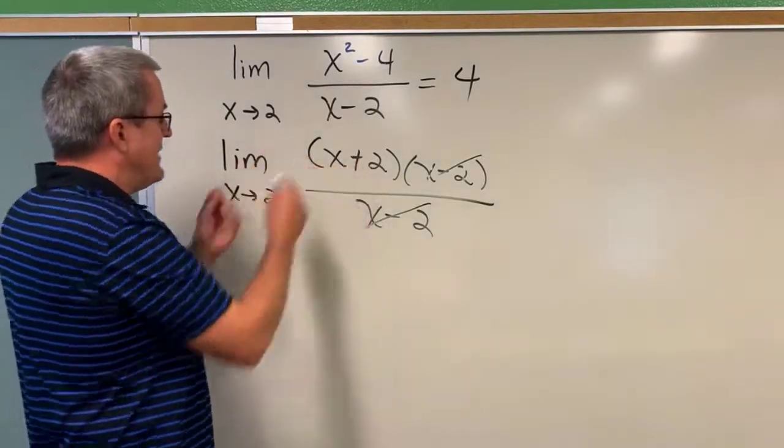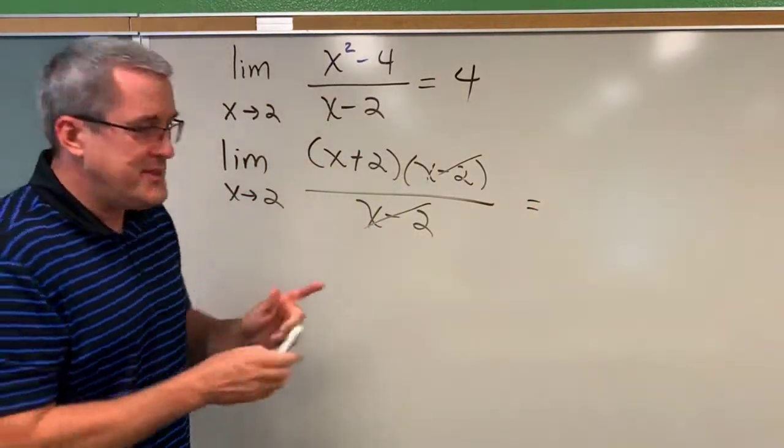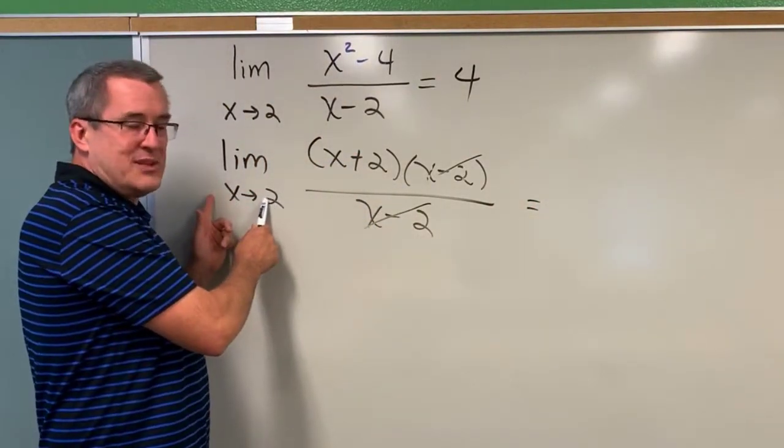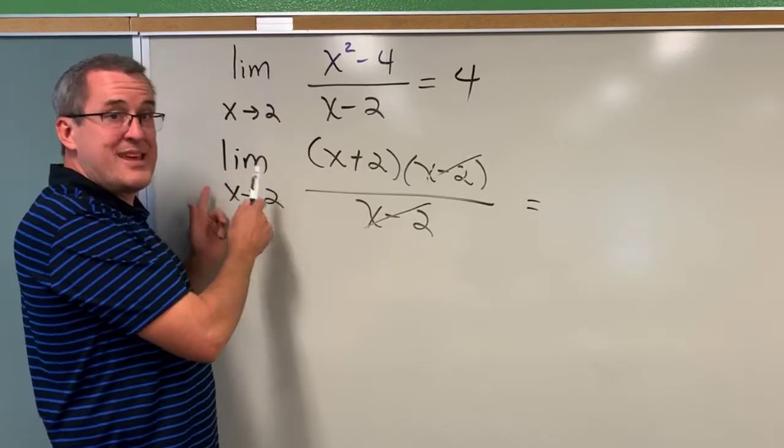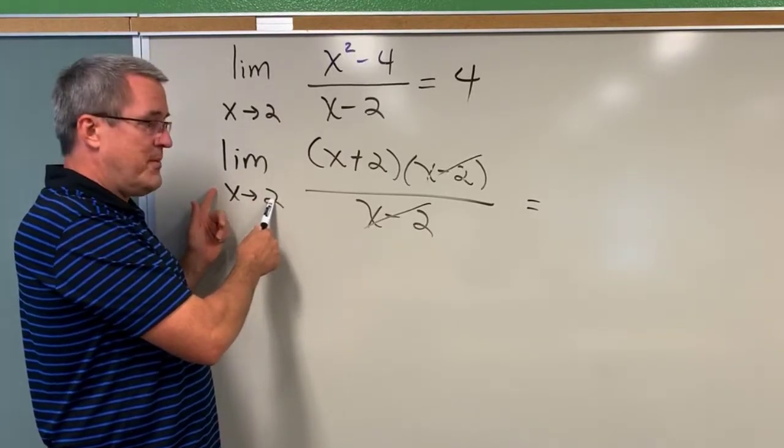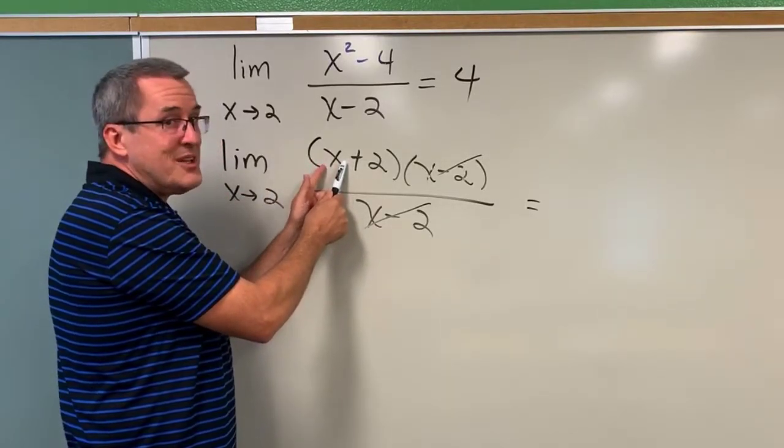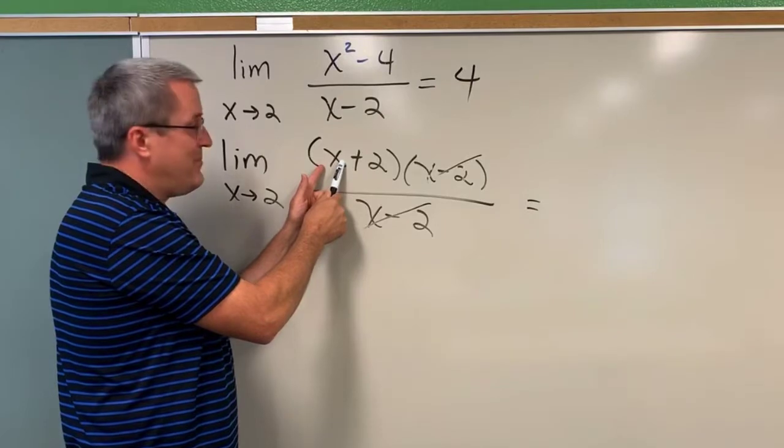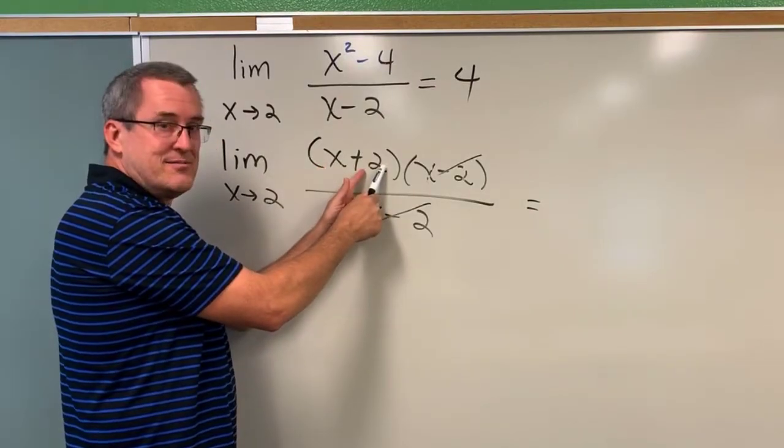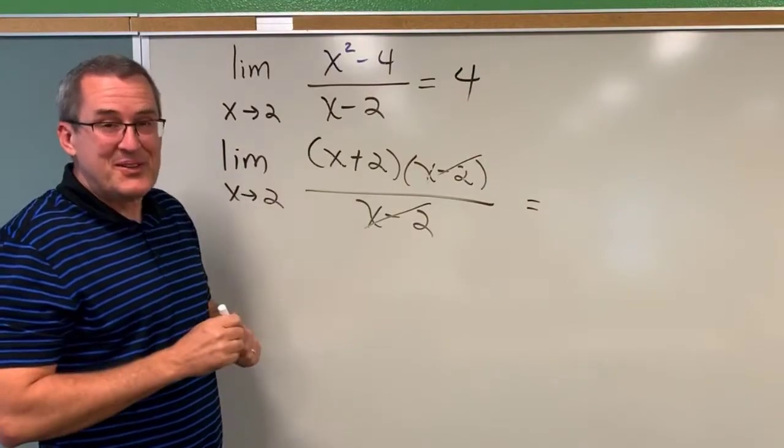So now we have the limit as x approaches 2 of x plus 2. And the way I'd like you to think about this is not to allow the input value of x to be equal to 2, but for it to be really nearby to 2. Can you imagine an x value that's really, really, really, really, really close to 2, and then you add 2 to it? The result is going to be a value that's really, really, really, really close to 4.